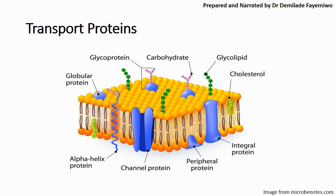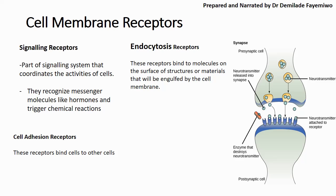We also have transport proteins: channel proteins as well as carrier proteins. Regarding cell membrane receptors, we have signaling receptors which recognize messenger molecules, or signal molecules, and as a result of binding to them, they can elicit a response — either as a chemical reaction or in other ways that ensure a response to whatever change the body is experiencing. We also have endocytosis receptors, which bind to molecules on the surface so that they can be engulfed by the cell. These become very important in Chapter 11 on immunity and Chapter 15 on synapses.